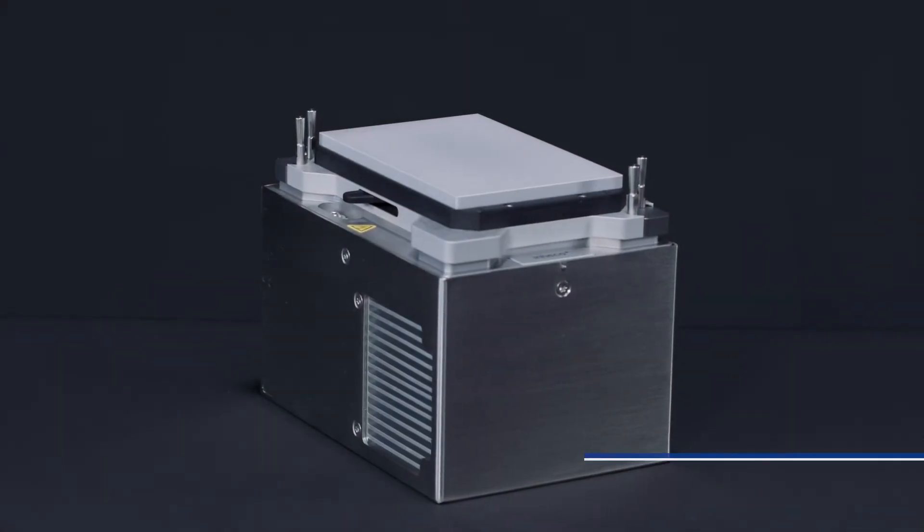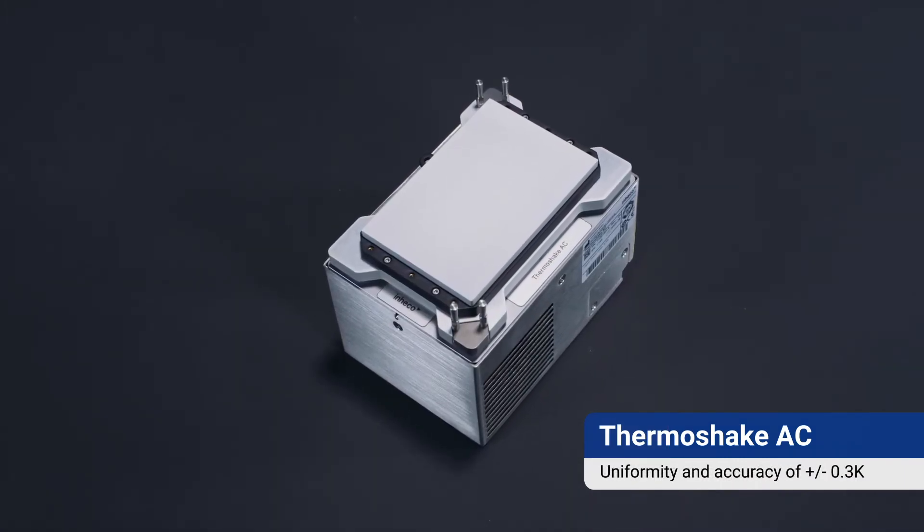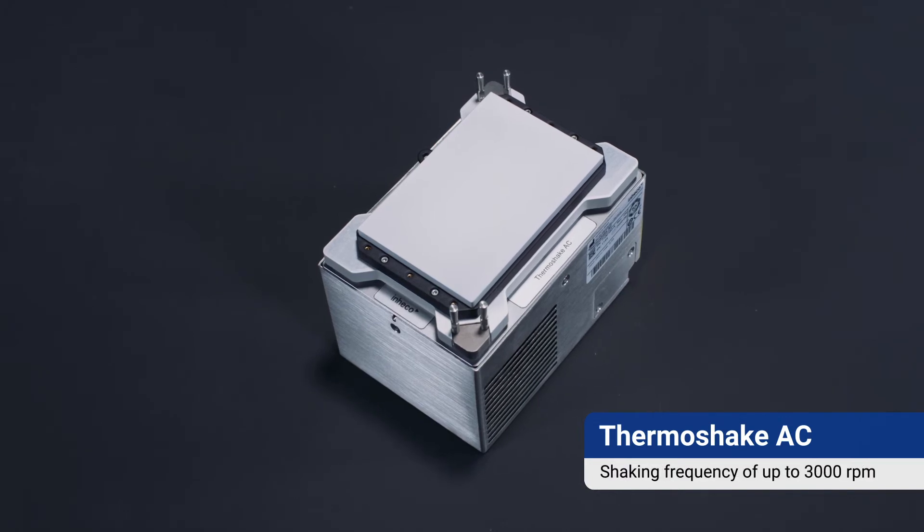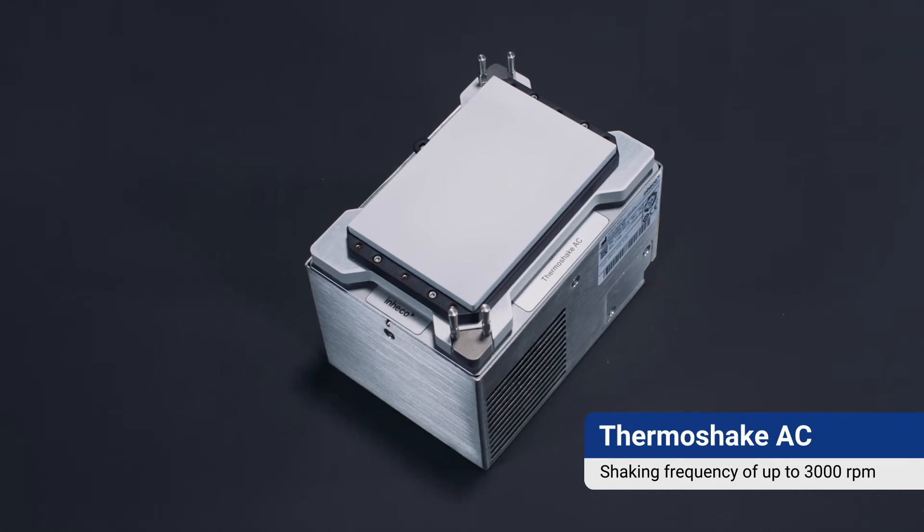With a temperature range of 4 to 70 degrees Celsius, uniformity and accuracy of plus minus 0.3 Kelvin and shaking frequency of up to 3000 RPM, the ThermoShake is an unrivaled performer.